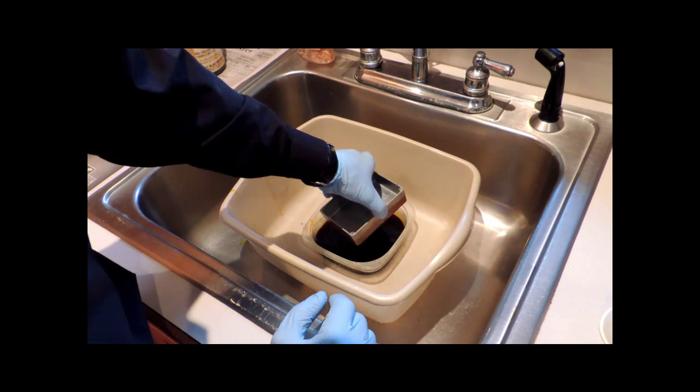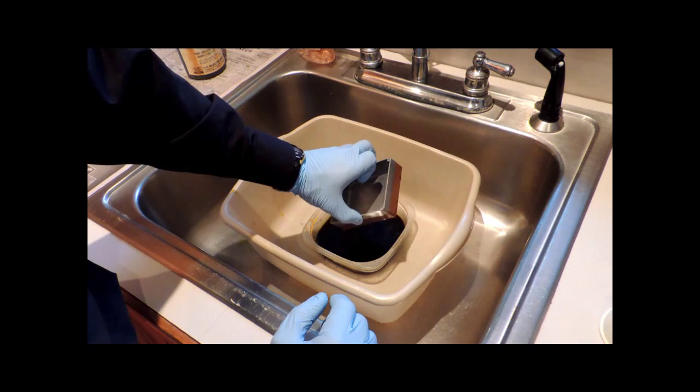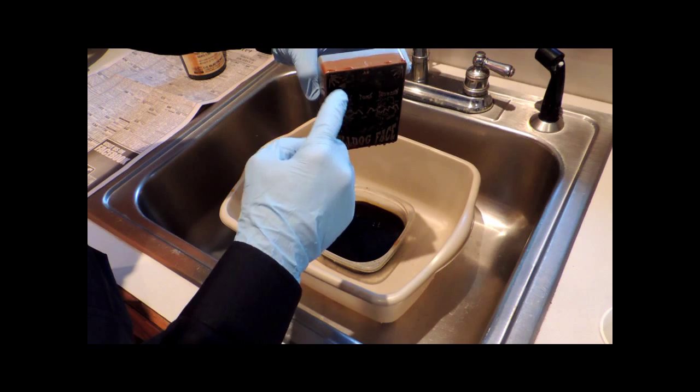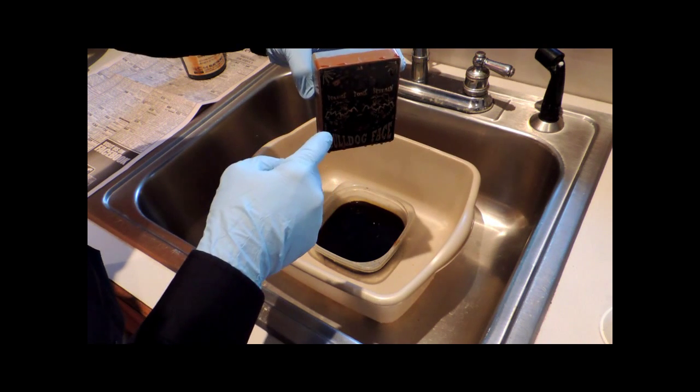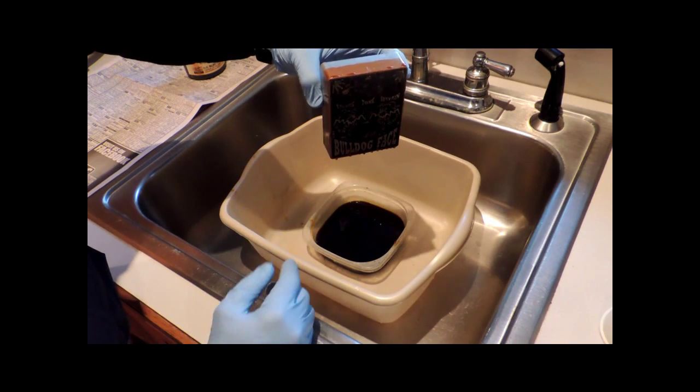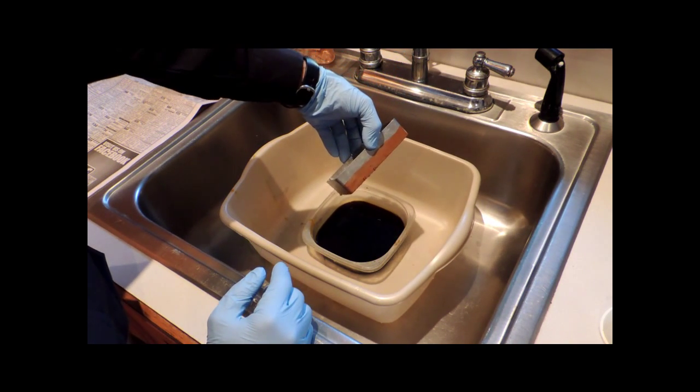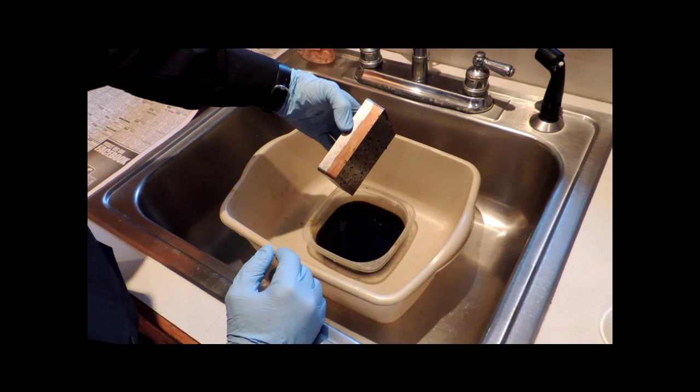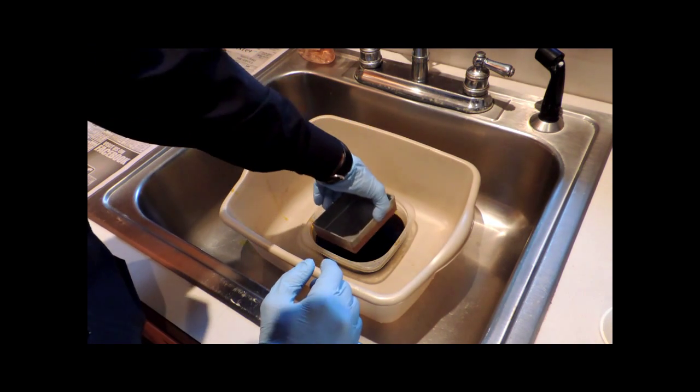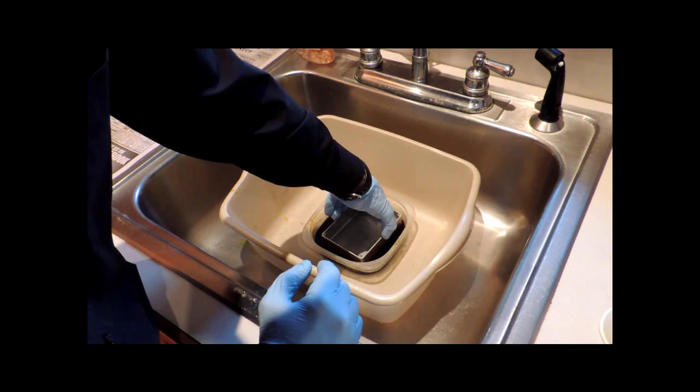As it's beginning to etch, we can actually take a look at it real quick here. It'll begin to bubble, as you can see. The bubbling is happening in the areas where there is no toner. And that's going to etch our pattern onto the bulldog face in front of the pedal. And so again, we're just going to let it float in here.